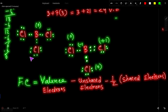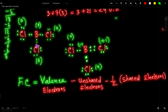In the original structure, all atoms have zero formal charge. But in the double-bond structure, we do not get zero formal charge for all atoms. Therefore, according to the formal charge criterion, we select the original single-bond structure as the best Lewis structure for BCl₃. This Lewis structure for BCl₃ violates the octet rule for boron, as boron only has 6 electrons around it.